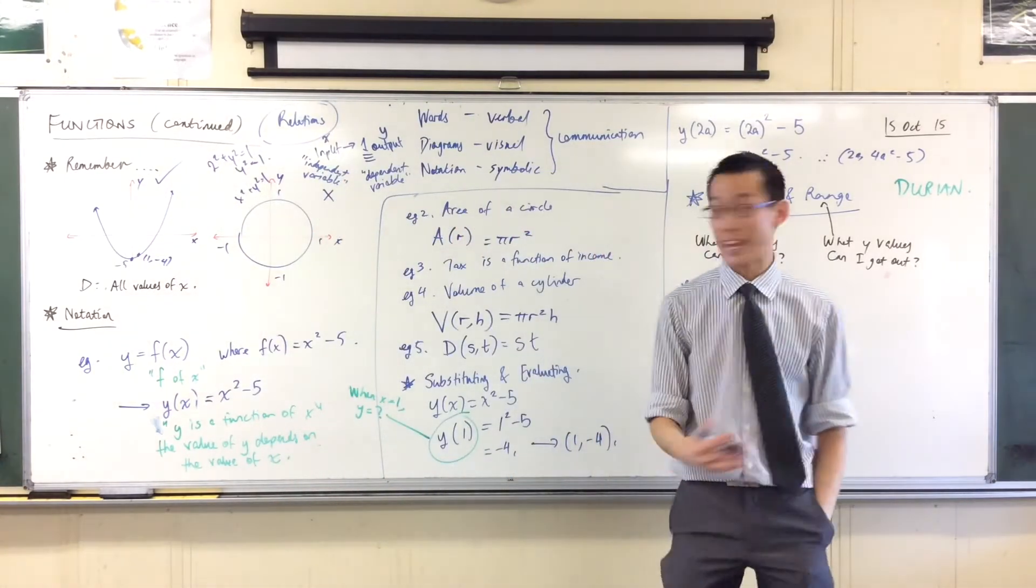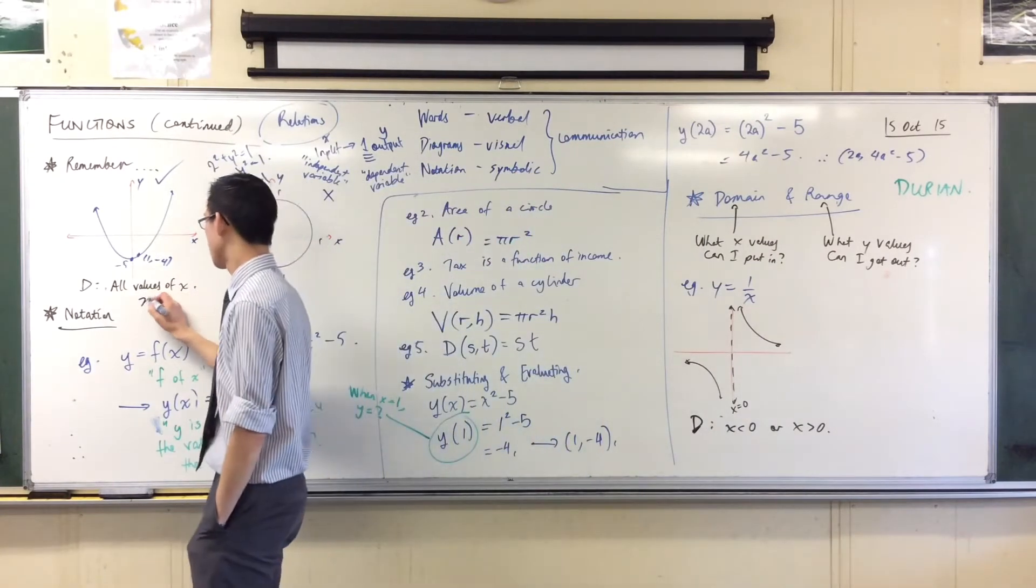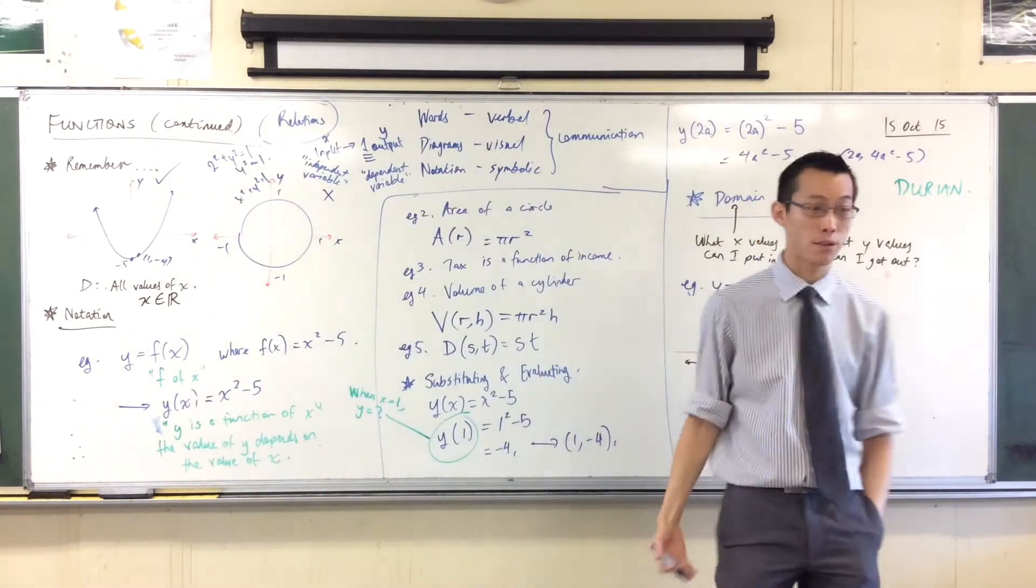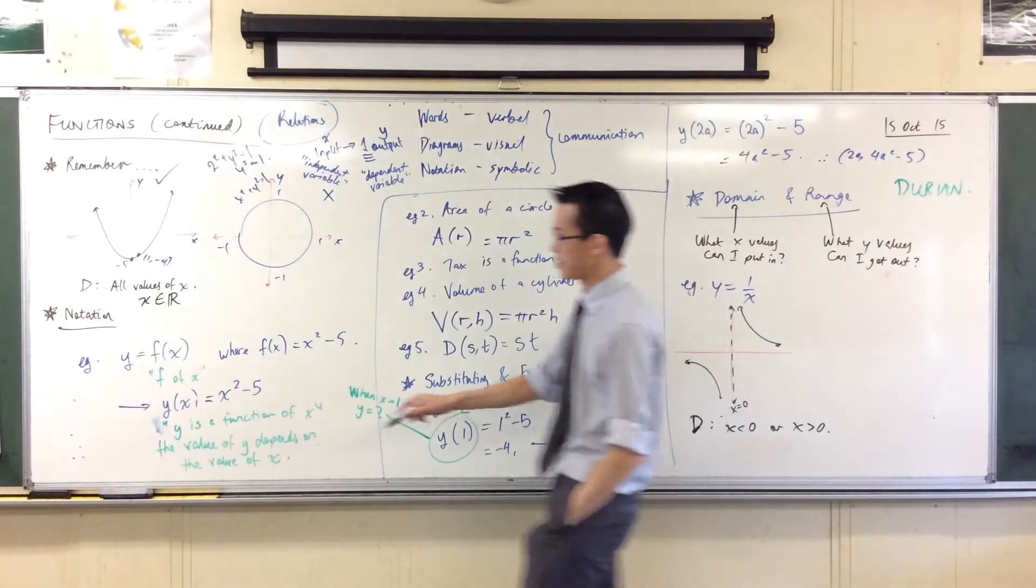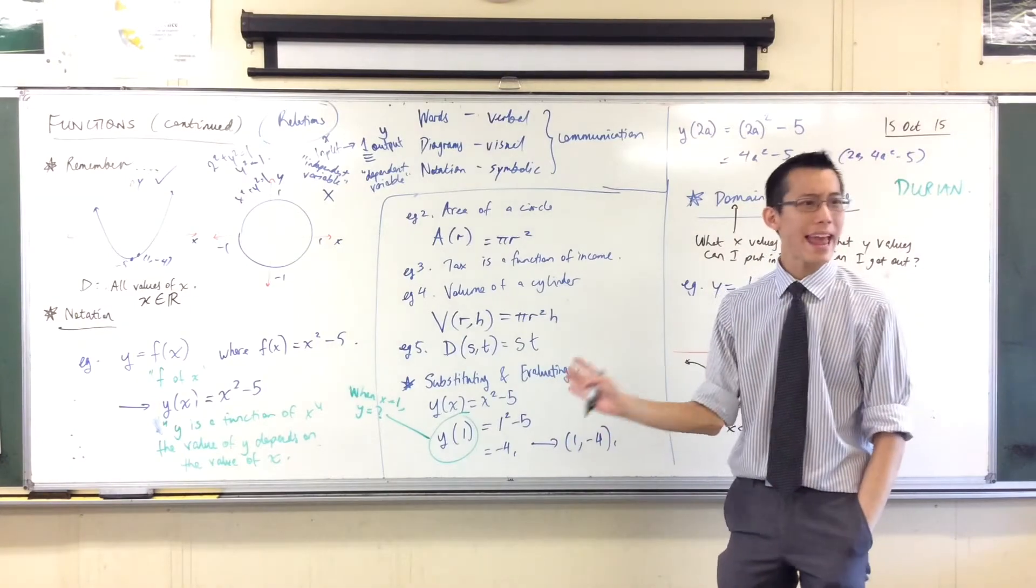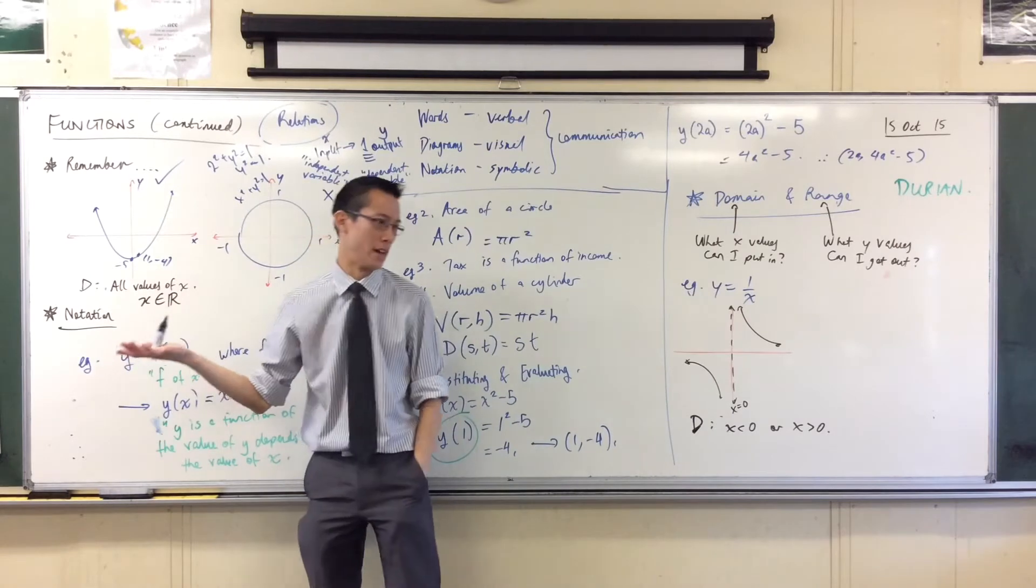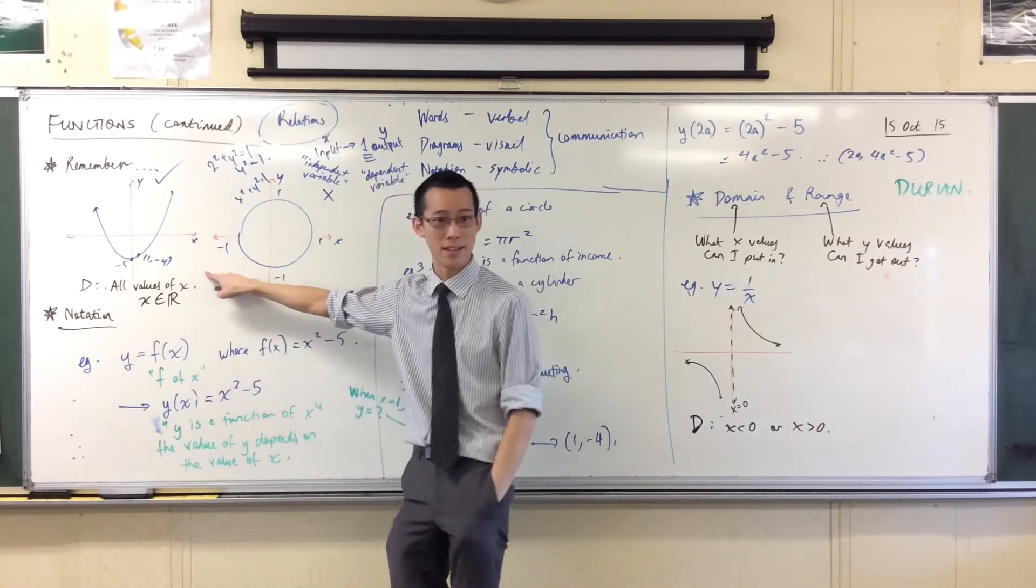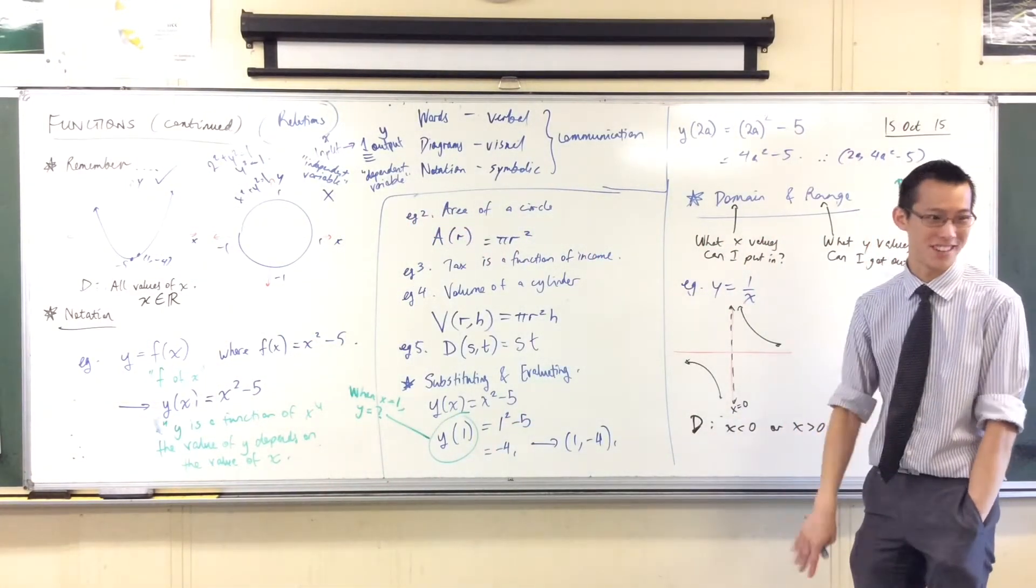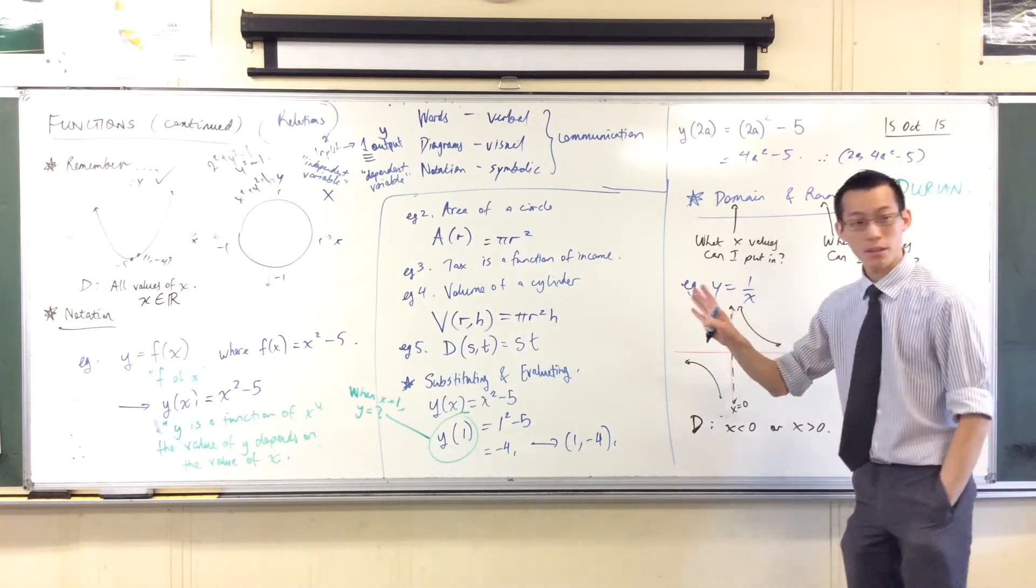Sometimes you will see in textbooks a little bit of weird notation here. I'll just quickly show you what it is and what it means. Sometimes you'll see this, x, a funny looking e, which is in fact not an e, it's an epsilon, which is the fifth Greek letter. And then you'll see an R which has an extra line on the end. What that means is x can be any real number, which is for our intents and purposes the same as saying all values of x. If you see this, this is what it means.